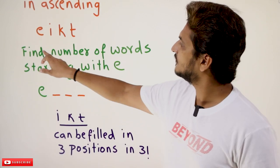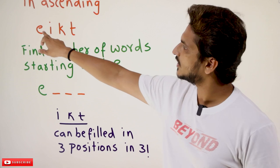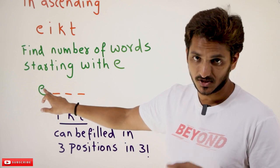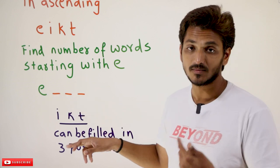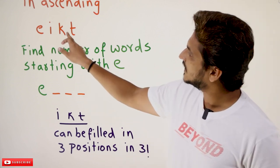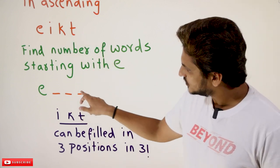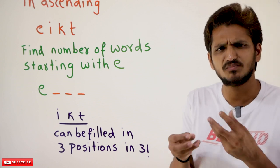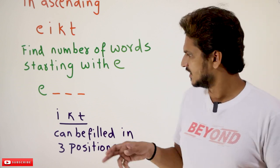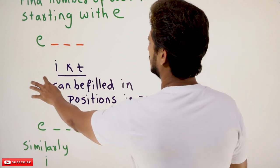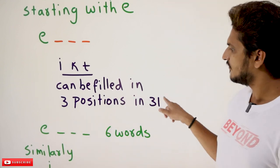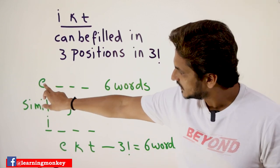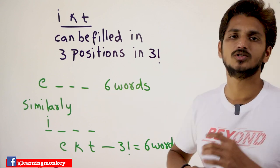First we need to find the number of words starting with E, because according to dictionary order E comes first. If you place E as the first character, the remaining three characters are I, K, T. These three positions can be filled in three factorial ways. Three factorial means six words are possible starting with E.